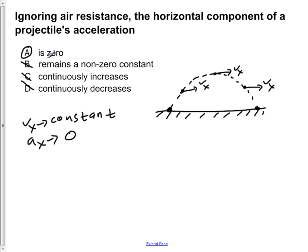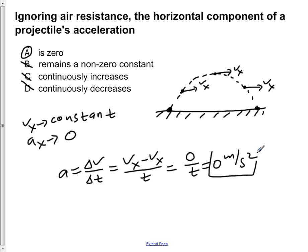So we see that A, stating it is zero, is correct. Because the horizontal component of the projectile's acceleration is zero because the velocity has remained unchanged. You remember that the acceleration is equal to the change in velocity over the change in time. If our velocity doesn't change as you progress over time, then your acceleration is equal to zero meters per second squared. So our acceleration is zero, which is choice A.